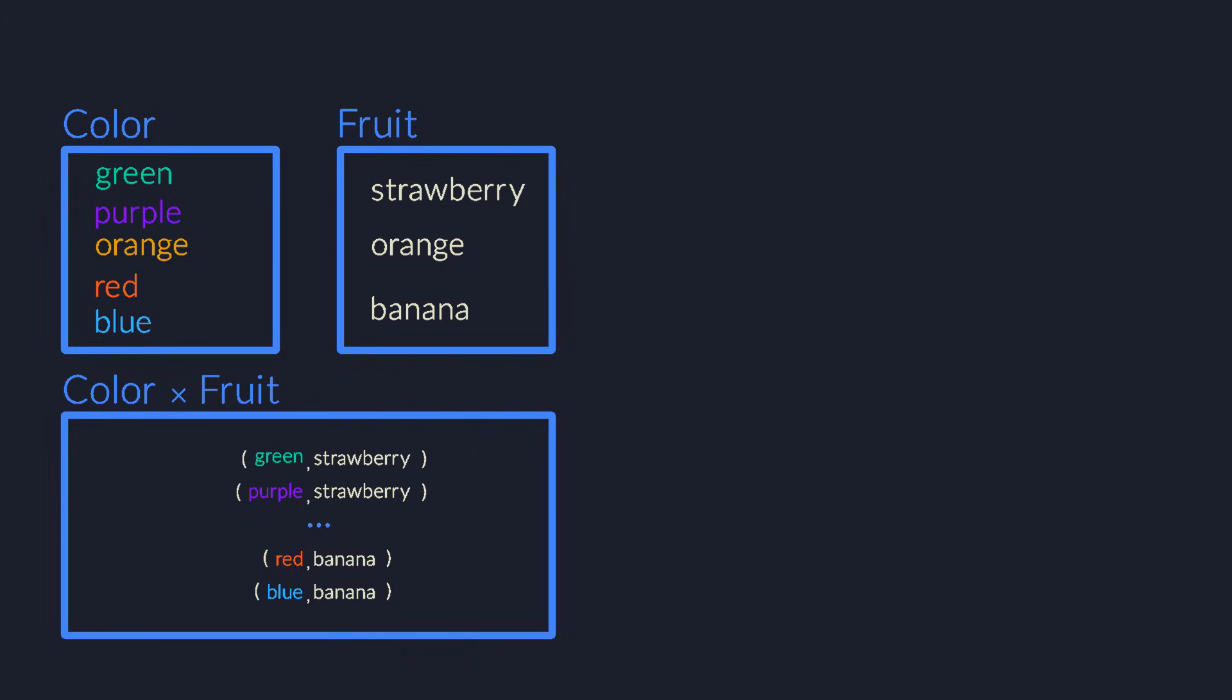How many pairs are there? Since the product type contains every possible combination of colors and fruits, it contains 5 times 3, or 15 possible values. Now you see why this type is called the product of the original types. It's because the size is the product of the original sizes.